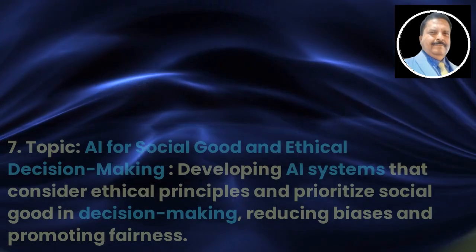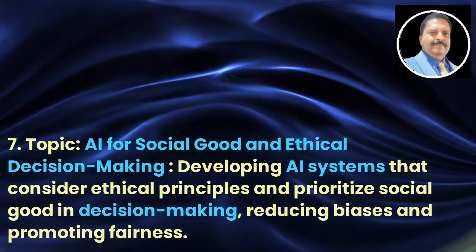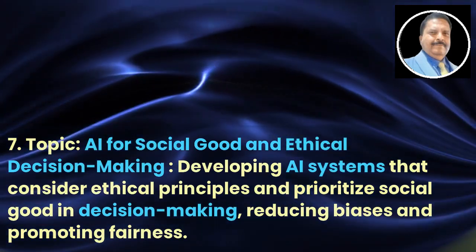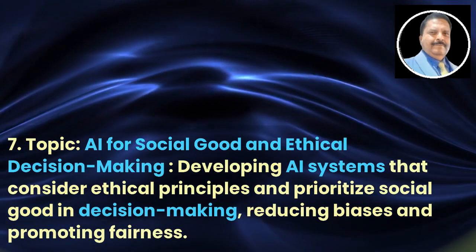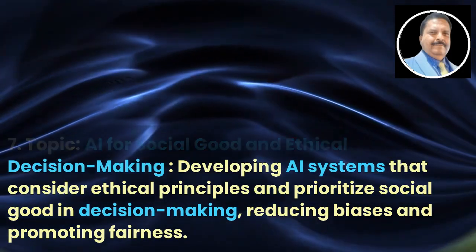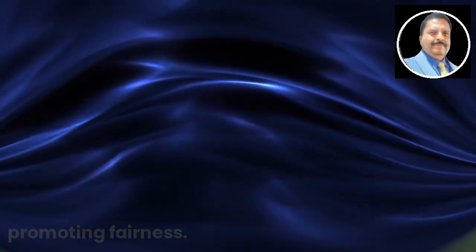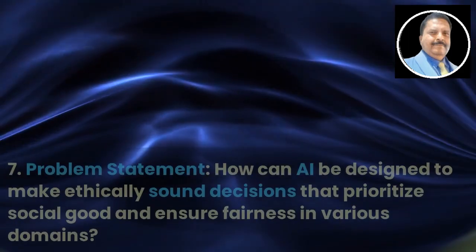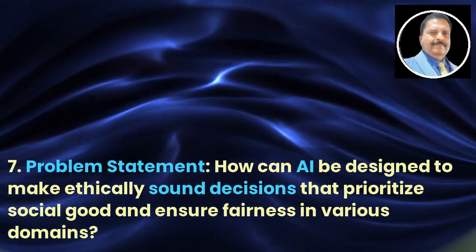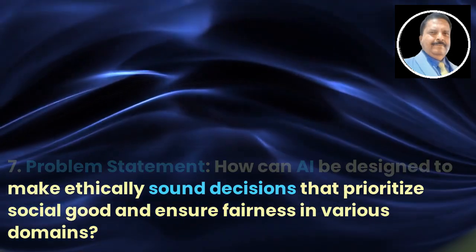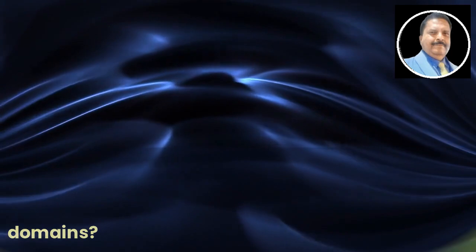Topic 7: AI for Social Good and Ethical Decision Making. Developing AI systems that consider ethical principles and prioritize social good in decision making, reducing biases and promoting fairness. Problem statement: How can AI be designed to make ethically sound decisions that prioritize social good and ensure fairness in various domains?